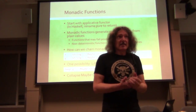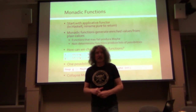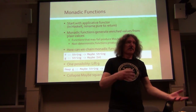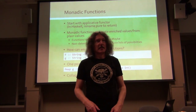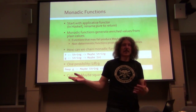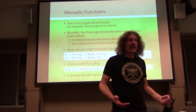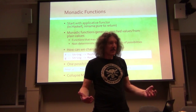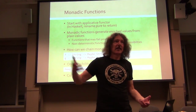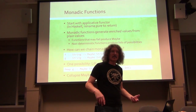So first, let's start with monadic functions - functions that return monadic values, in our case async values. They just take whatever arguments, like a file handle, but they return an async. We have a bunch of such functions - the APIs - that return async objects, and we want to be able to chain them.